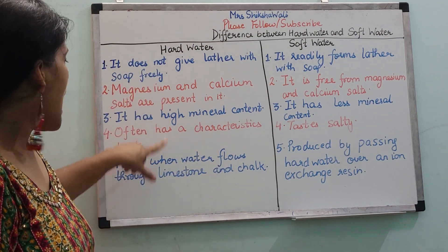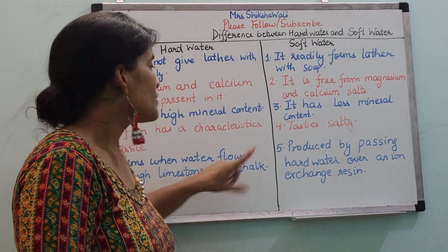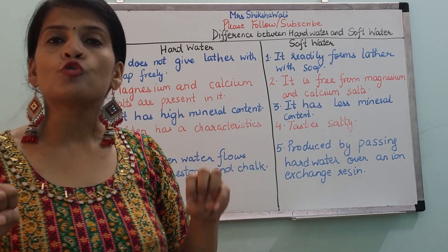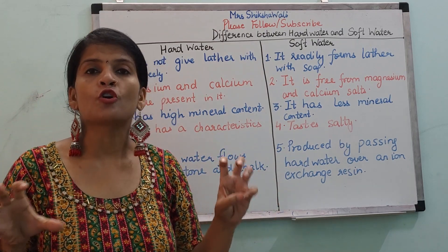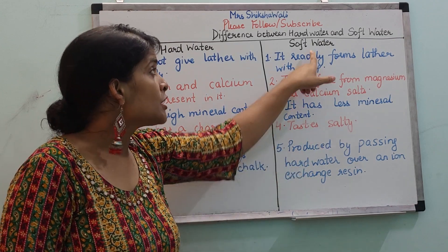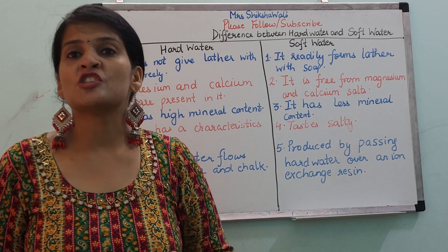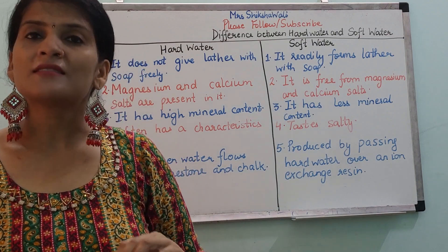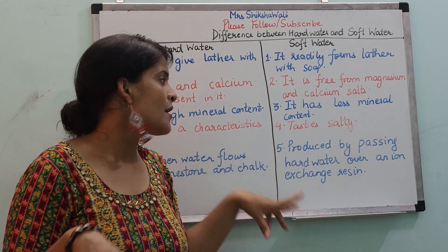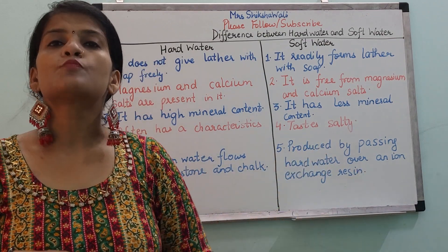Hard water forms when water flows through limestone and chalk. Soft water is produced by passing hard water over an ion exchange resin.